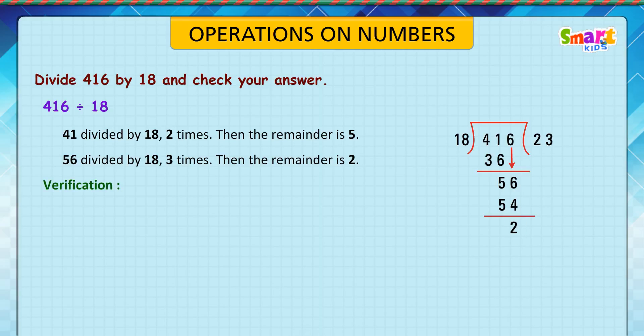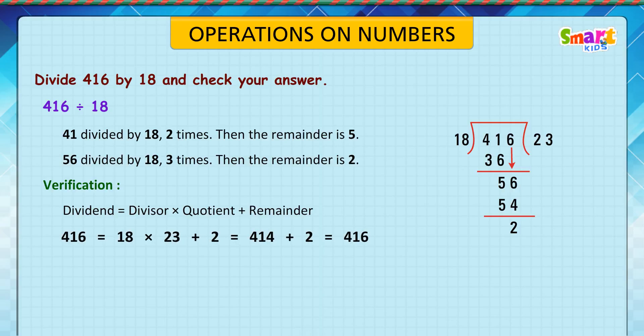Verification: dividend is equal to divisor into quotient plus remainder. 416 is equal to 18 into 23 plus 2, which equals 414 plus 2, which equals 416.